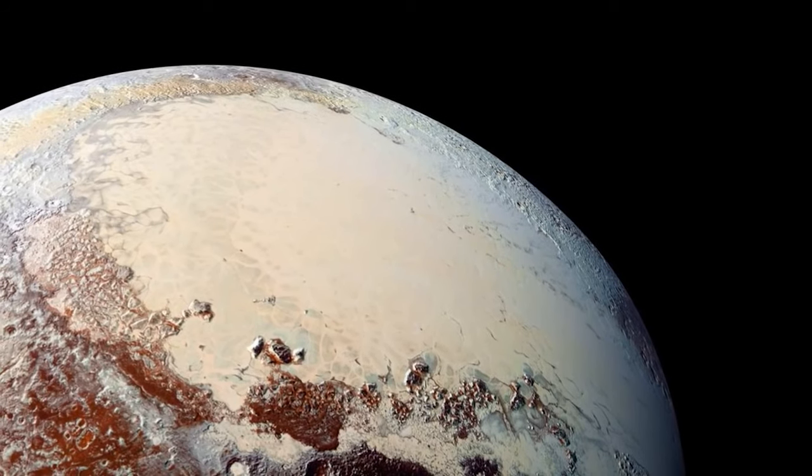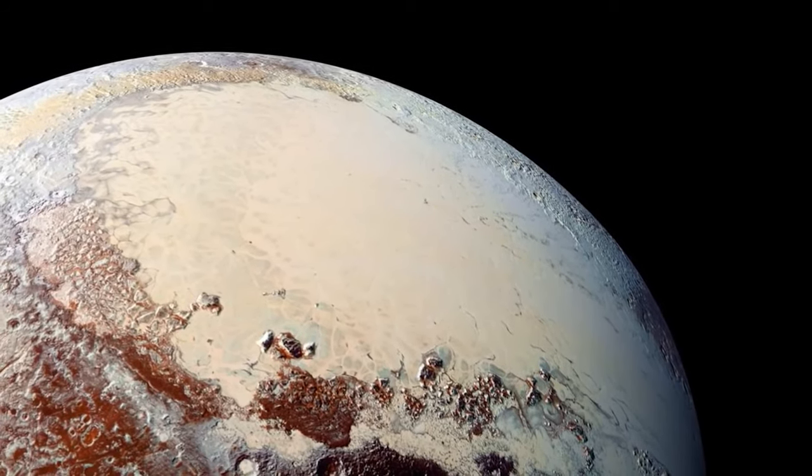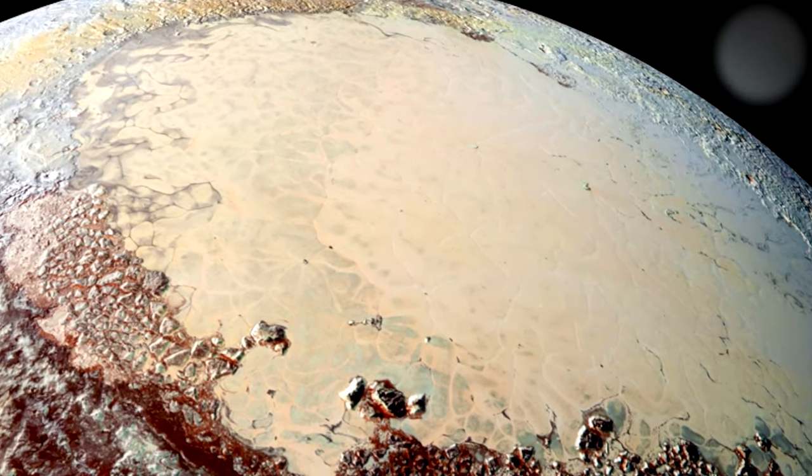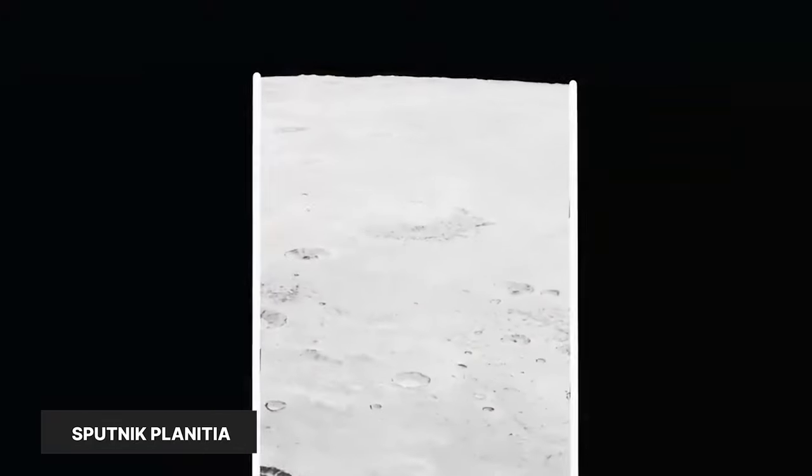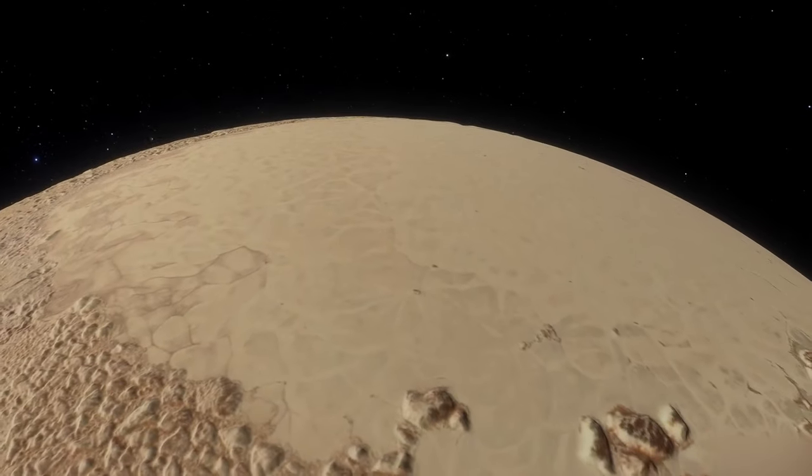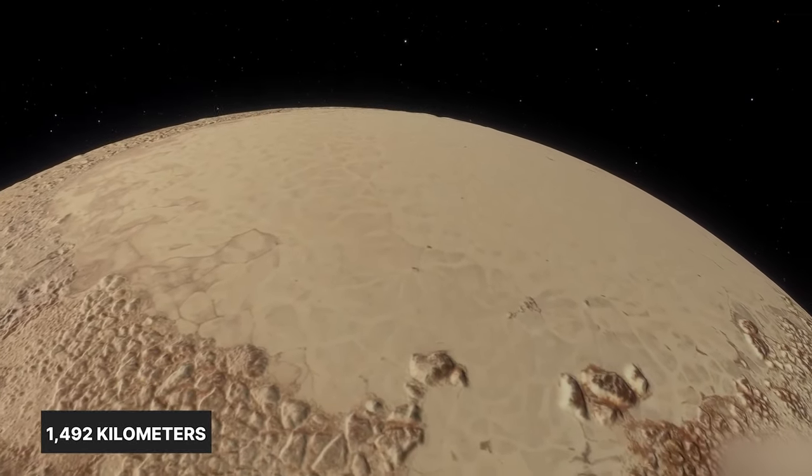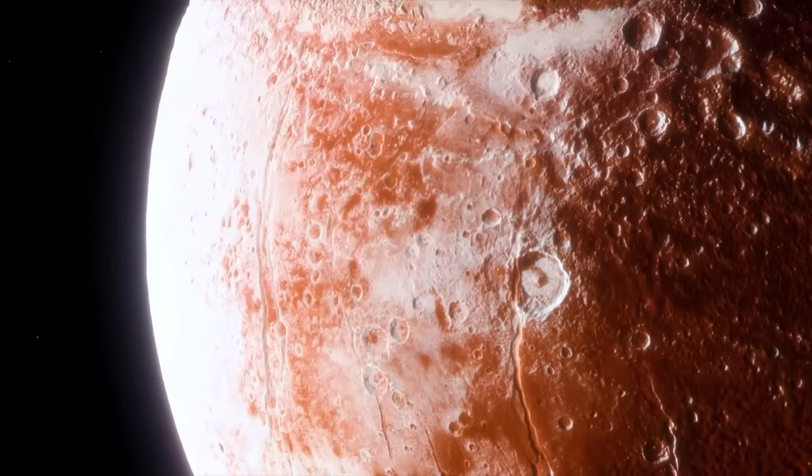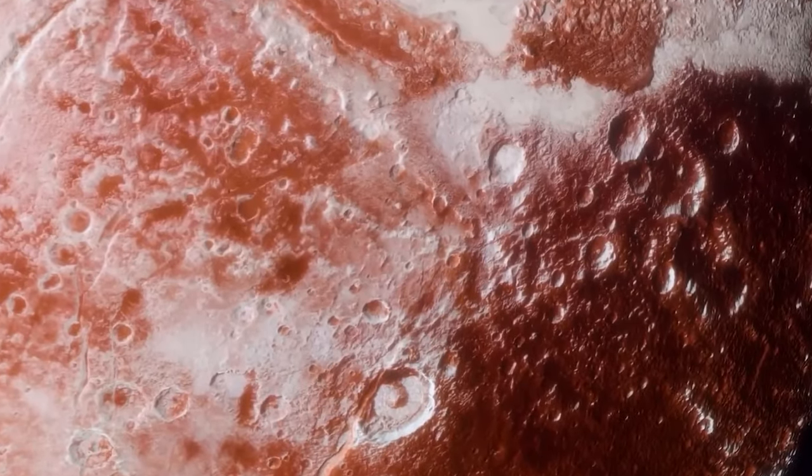The surface of Tombaugh Regio exhibits variation, featuring a smooth and lightly-colored plane in its western sector, known as Sputnik Planitia. This region stretches across 1,492 kilometers in diameter and stands as a substantial lowland area when examined through an elevation map.